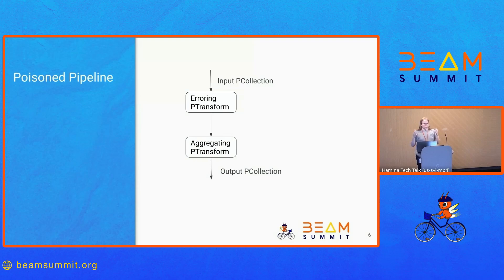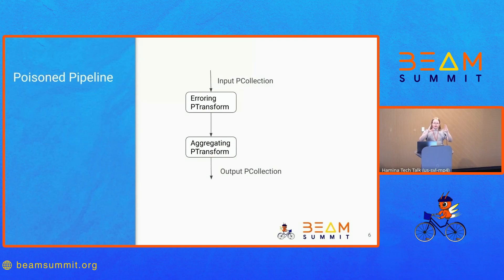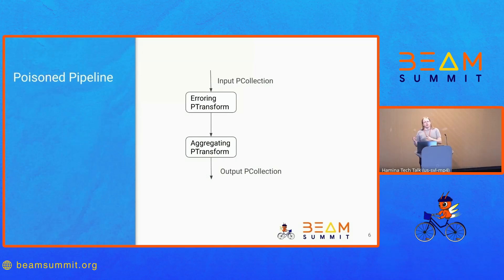The worst scenario is when there's an aggregation involved. If you have an error in a transform that's supposed to feed a windowed aggregation — say, a count of user events in the last five minutes — one failing element that keeps getting retried means the window will never finish. That entire windowed aggregation gets stuck, with no good way to recover, and that can poison a lot of your data. In practice, most people don't want this behavior.